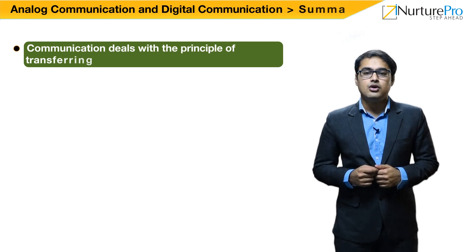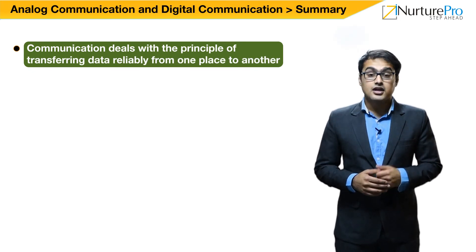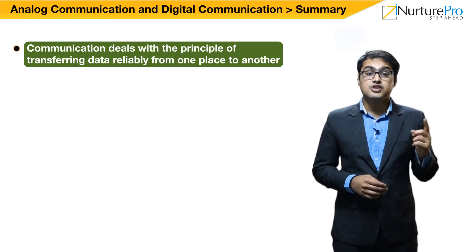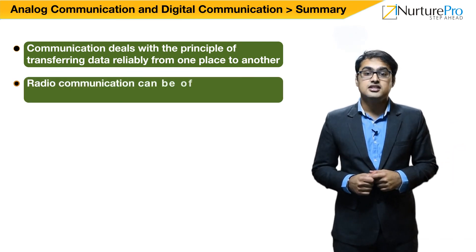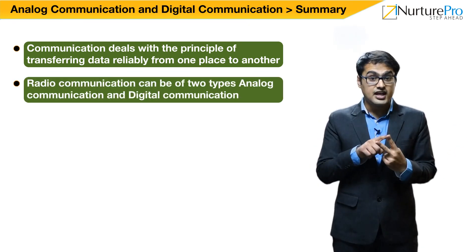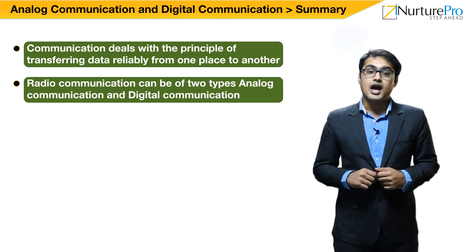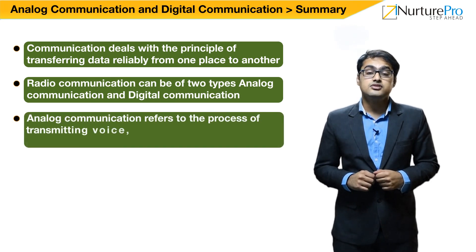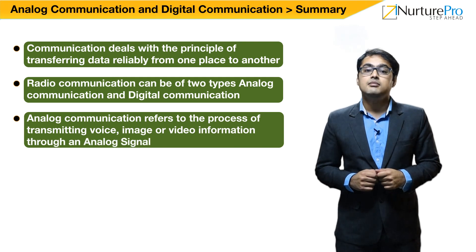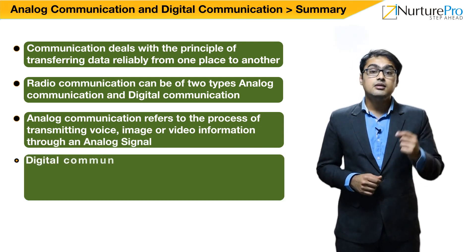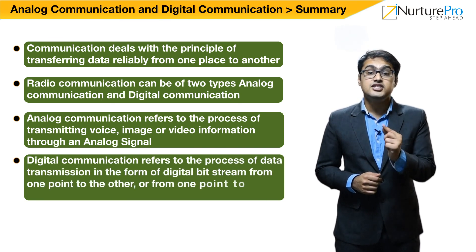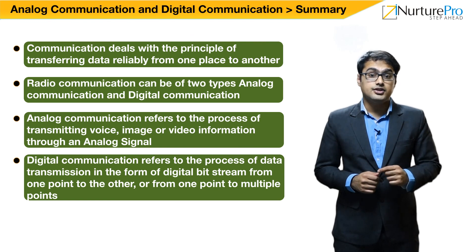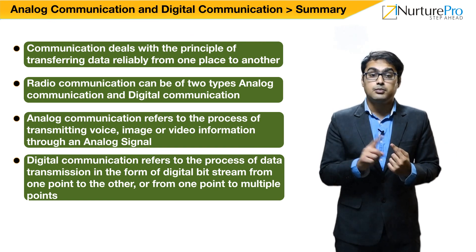Let's have a quick recap of what we discussed. Communication deals with the principle of transferring data reliably from one place to the other. Radio communication can be of two types: analog communication and digital communication. Analog communication refers to the process of transmitting voice, image, or video information through an analog signal. Digital communication refers to the process of data transmission in the form of a digital byte stream from one point to the other, or from one point to multiple points.